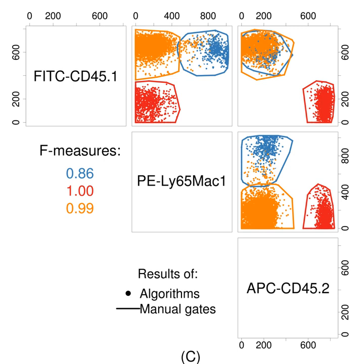Particularly in multi-center studies, technical variation can make biologically equivalent populations of cells difficult to match across samples. Normalization methods to remove technical variants, frequently derived from image registration techniques, are thus a critical step in many flow cytometry analyses. Single marker normalization can be performed using landmark registration, in which peaks in a kernel density estimate of each sample are identified and aligned across samples.